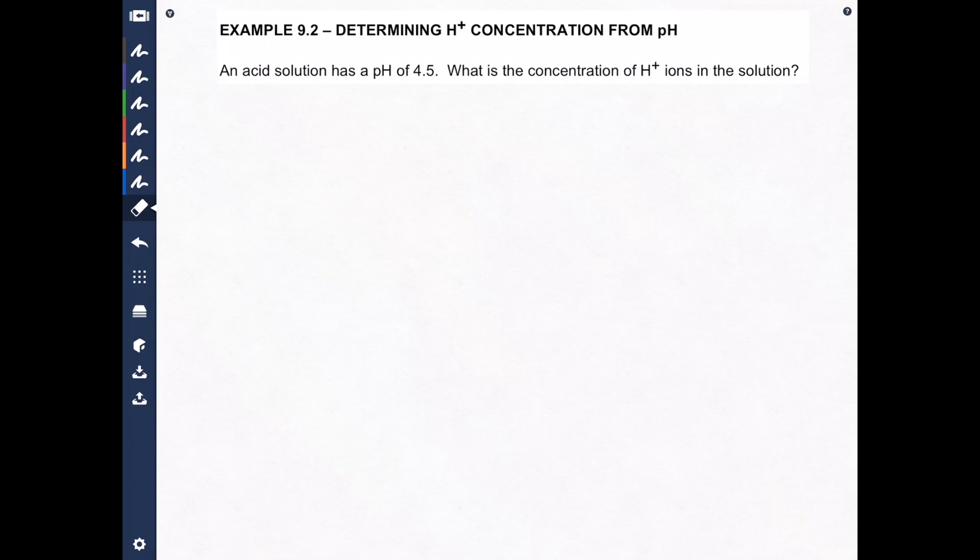Okay so essentially we're going to be calculating the opposite of pH. You will recall that pH equals the negative log of the concentration of H+. There is a formula though if you want to calculate the concentration of H+. It is simply 10 to the negative value of the pH.